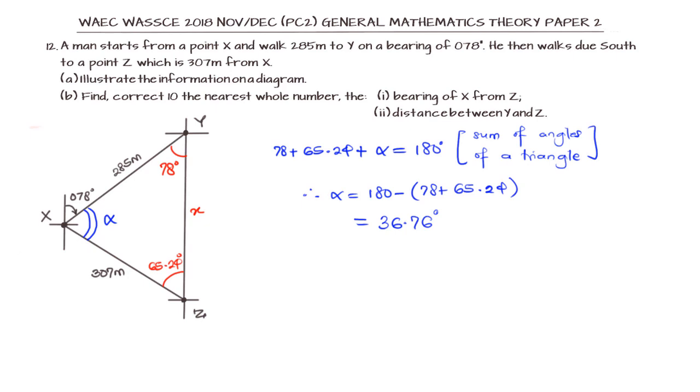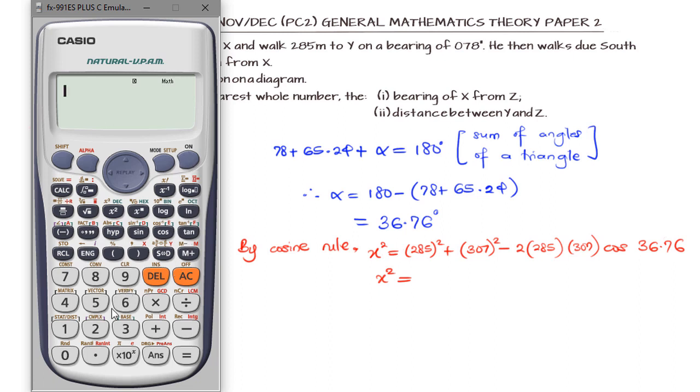Now knowing the value of alpha, we can use either the sine rule or the cosine rule. Because we've used the sine rule before, I would prefer to use the cosine rule. By the cosine rule, x squared will be 285 squared plus 307 squared minus 2 times 285 times 307 times cos alpha. Our alpha is 36.76. You can check our videos on triangles so that you can have a good grasp of the sine rule, the cosine rule, and all the other properties of triangles.